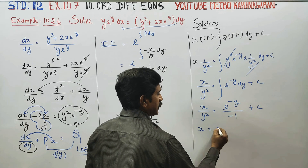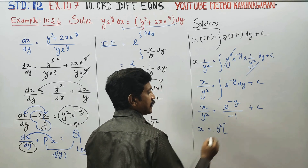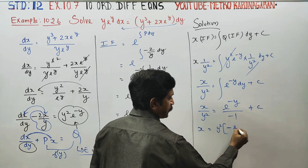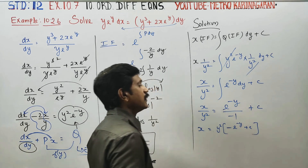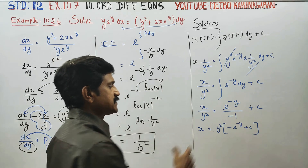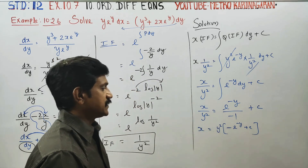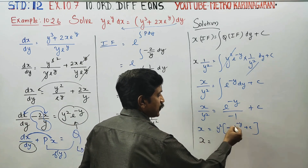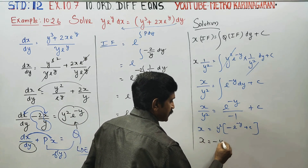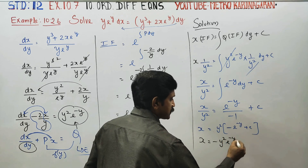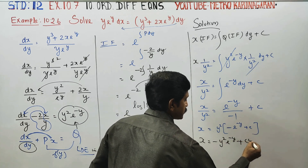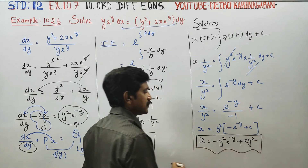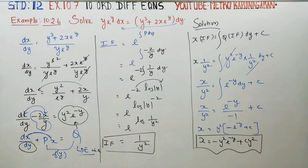Multiply both sides by y²: x = y²·(−e^(-y)) + C·y². Therefore x = −y²·e^(-y) + Cy². This is your final solution for this differential equation. Okay, thank you.